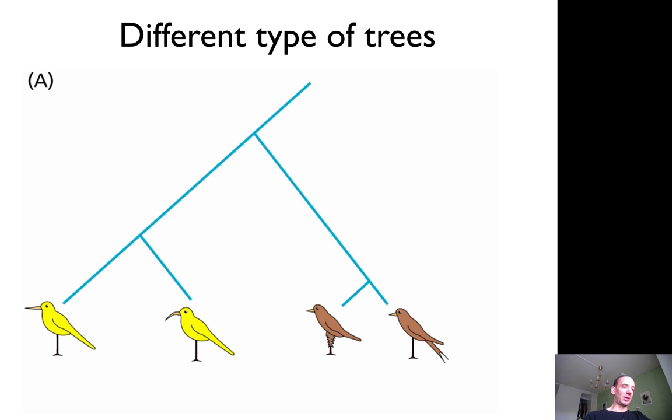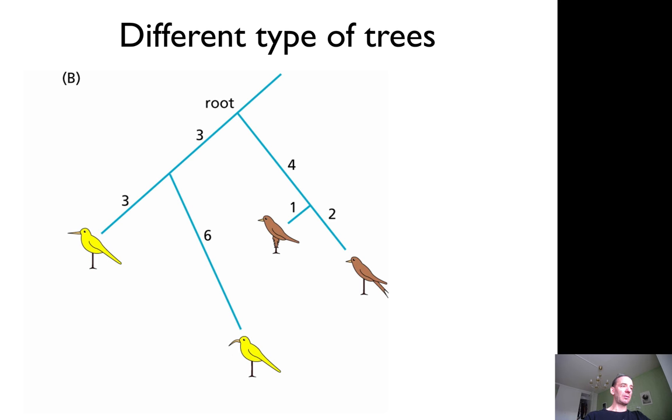You also predict that these two groups of yellow and brown birds are more different from each other than they are within the same group. But if you measure distance, maybe you can't make a tree like that. Maybe you have to adjust the tree like this, counting the number of mutations.